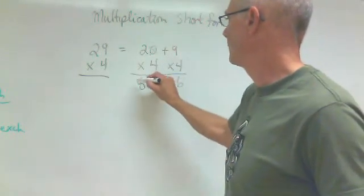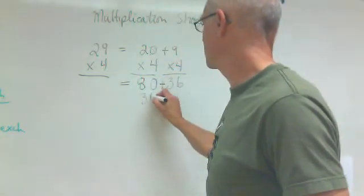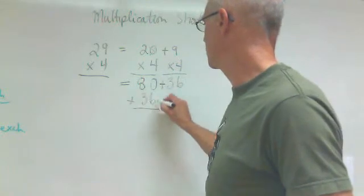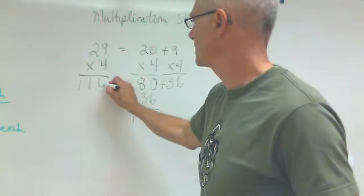Now we have to add them back up together to get what the total is. So 80 plus 36. Just stack them to do it easily. 6, 1, 1. So the answer to this question is 116.